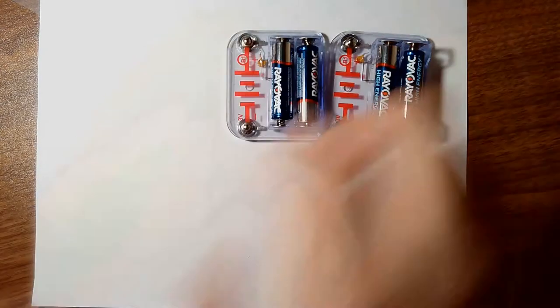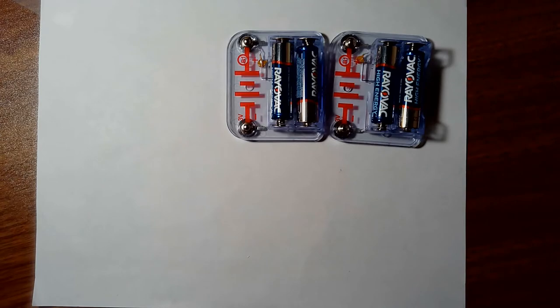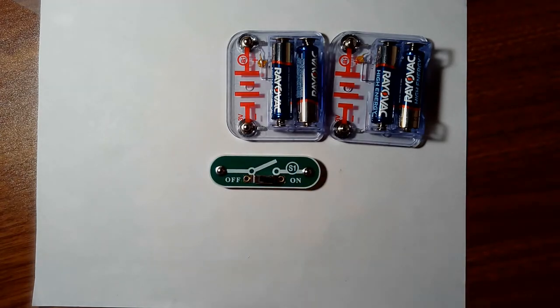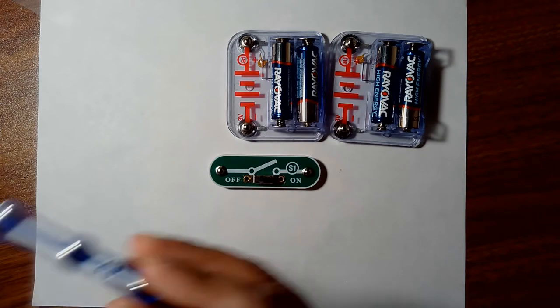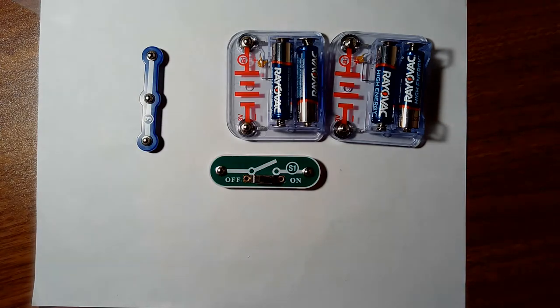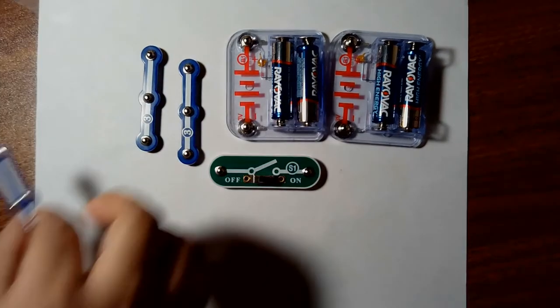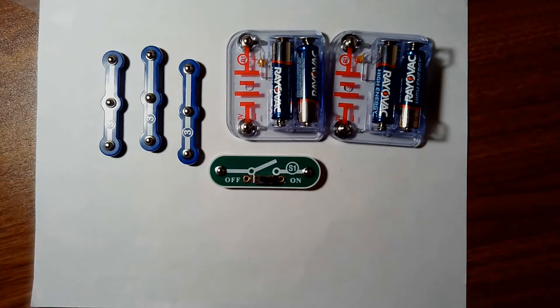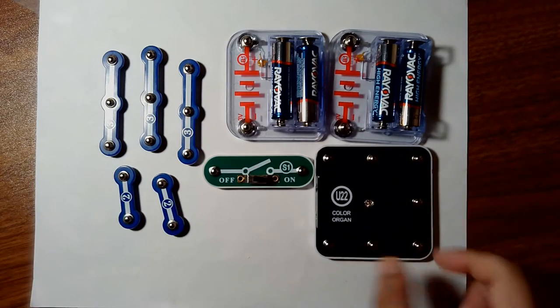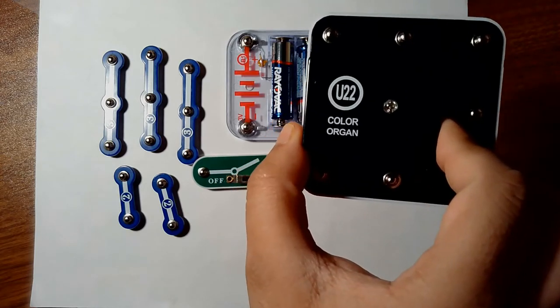So for this project, we will need two pairs of batteries, we need this S1 switch, we need three snap wires - one, two, three. We need two of these two-step wires. Definitely we need this color organ.